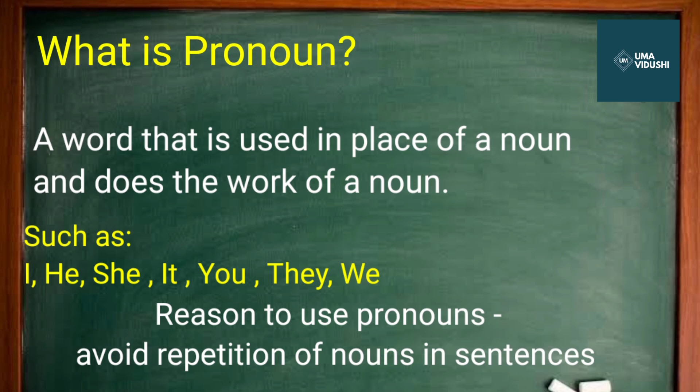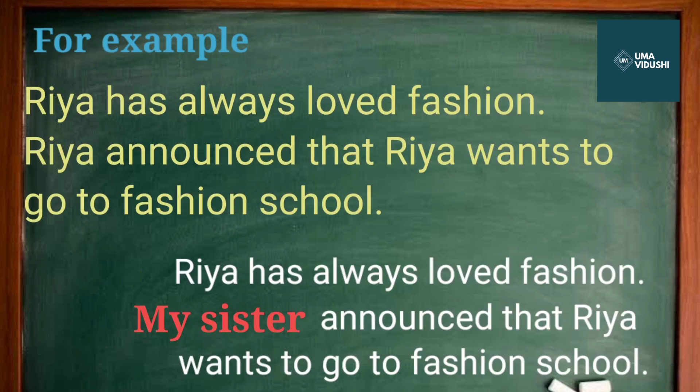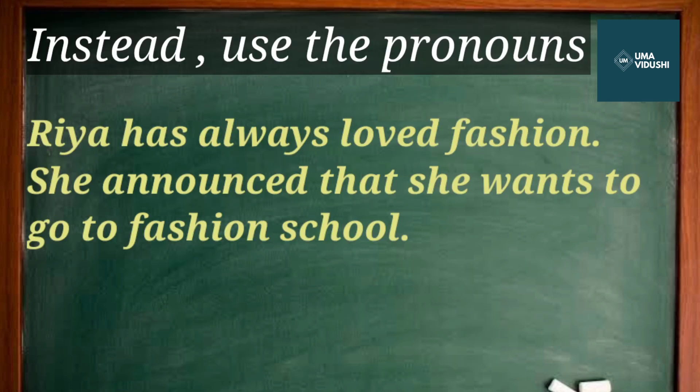Let's understand it with some examples. As you can see in the above sentences, here Rhea is repeated three times, which sometimes sounds very unpleasing. So instead of Rhea, we can use 'my sister,' but again it looks like we are talking about two different people. So instead, we will use the pronoun 'she' — like 'Rhea has always loved fashion. She announced that she wants to go to fashion school.' So here we can say that a pronoun can be used as a noun and does whatever work a noun does.